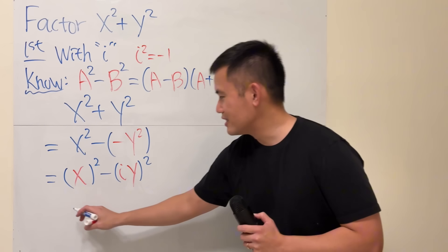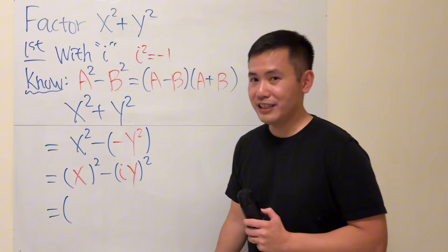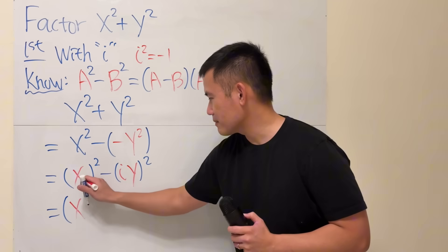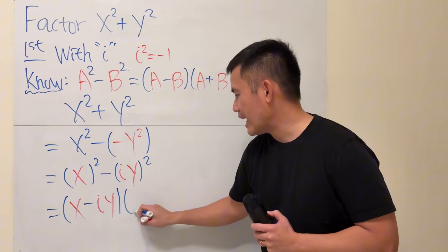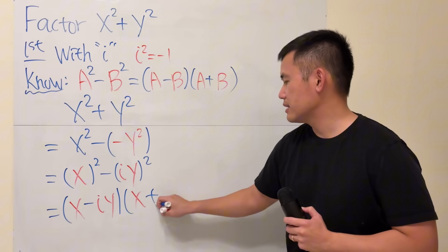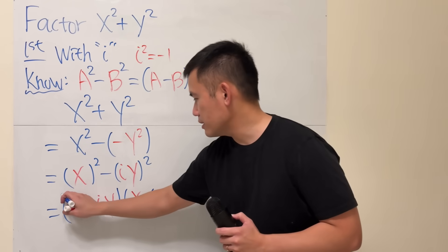There you have it. We have this in this form. So, let's go ahead, factor it, and we get x minus i y times x plus i y. Just like this.